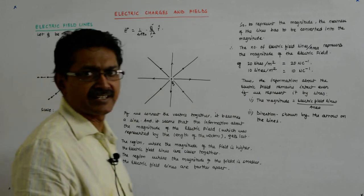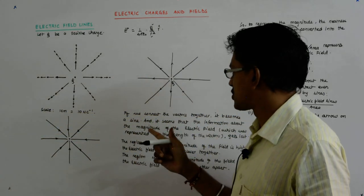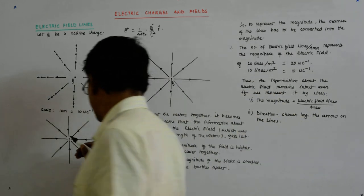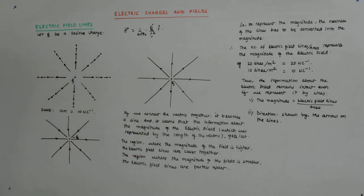So this is the field representation of the single charge. This being the negative charge, minus q, and this being the positive charge, plus q.